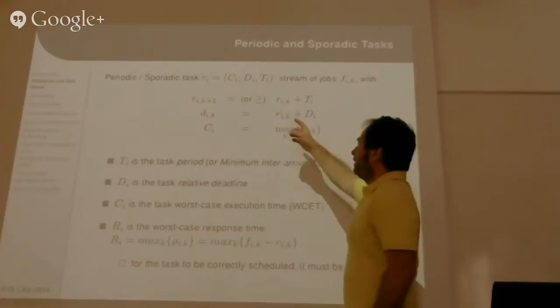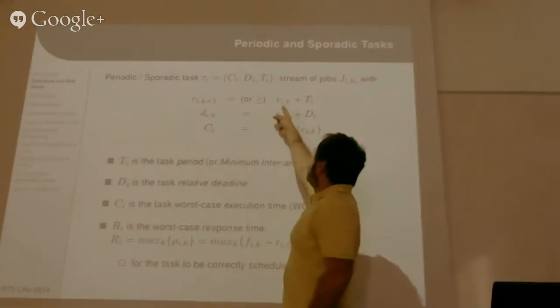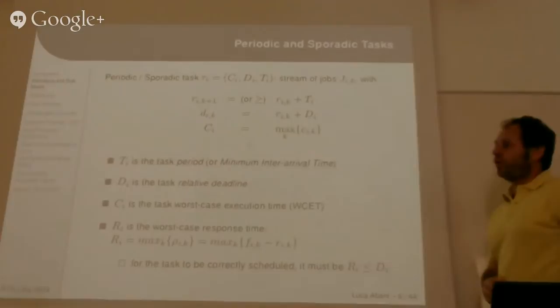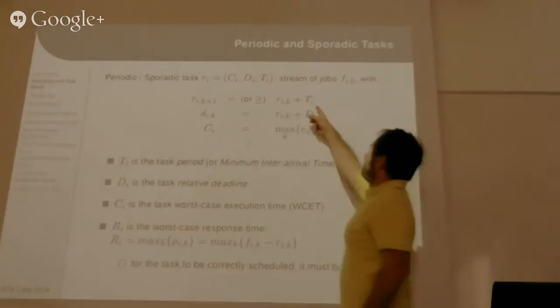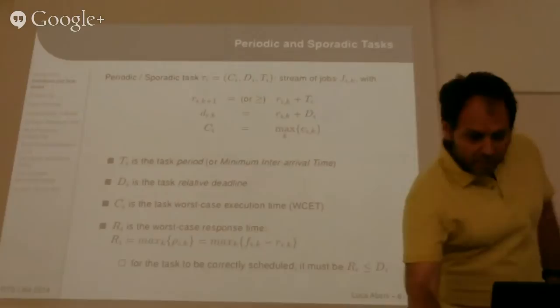A sporadic task is similar, but the arrival times are not regular. In a sporadic task, the arrival time of job k+1 is greater or equal than the arrival time of the previous job plus a constant, which is called the minimum inter-arrival time. So for periodic tasks, arrivals are periodic with a specified period. For sporadic tasks, arrivals have a minimum distance called minimum inter-arrival time.